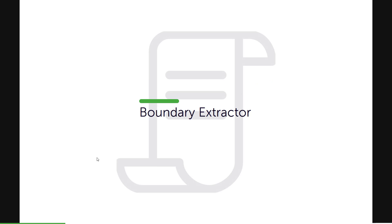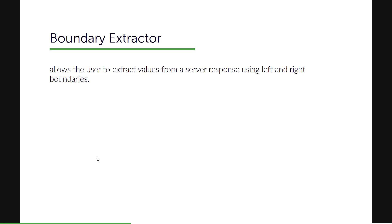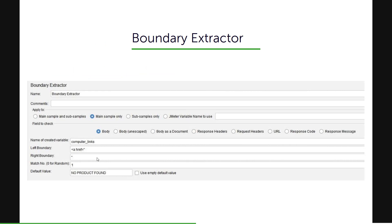In the last class, we saw CSS and jQuery based syntax. Now we are going to talk about a very simple extractor in JMeter called Boundary Extractor. It allows the user to extract values from a server response using the left and right boundaries. It is very similar to other extractors where you can mention the apply-to field, the field to check, a variable name, and the left and right boundaries, plus the match number.